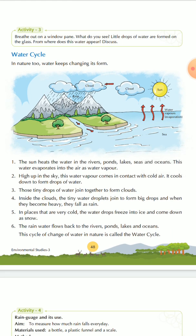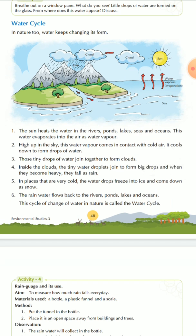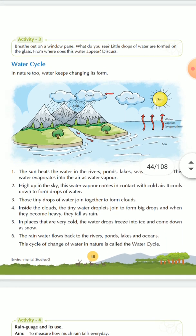In that process, somewhere you see rainfall and somewhere you see snowfall, and both are precipitation. The sixth point is: the rainwater flows back to the rivers, ponds, lakes, and oceans. This cycle of change of water in nature is called the water cycle. This is a very important line — it can be asked in tests or exams, so you have to learn this.